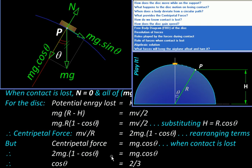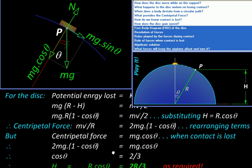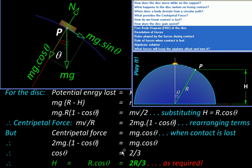So it is not important how heavy the disc is. So far there is no friction, it will behave the same way. So all disks will lose the contact at the same theta.